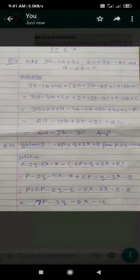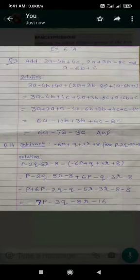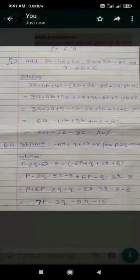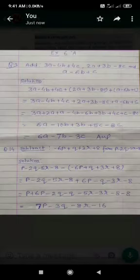Now open the bracket. First we write P minus 2Q minus 5R minus 8. Minus times minus is plus, so this is equal to 6P. Minus times plus is minus, so Q is written again minus. Minus times plus is minus, then write 3R. Minus times plus is minus, the constant term is 8.